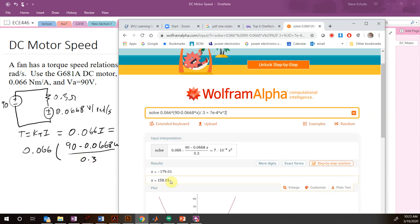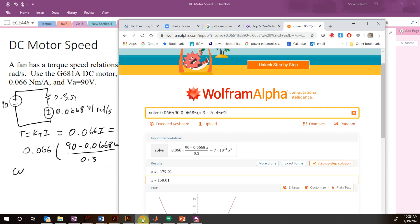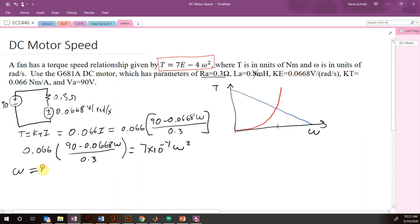So my ω is equal to 158 radians per second. Looks right. We also might want to be able to get it in RPMs, and so then we go ω equals 158 times 60 over 2π.